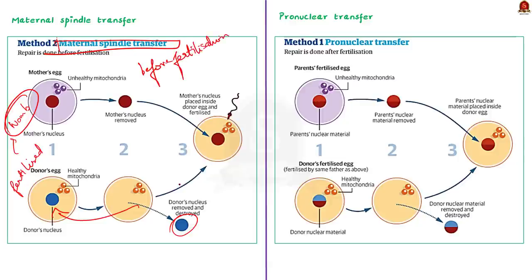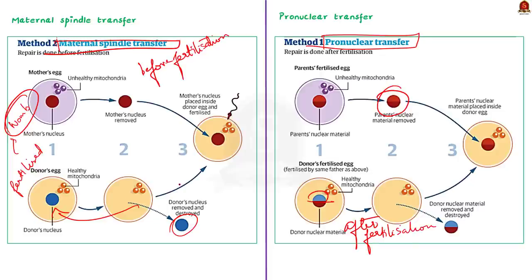Now, pronuclear transfer is essentially the same as maternal spindle transfer, but the donor's egg nucleus is replaced with the mother's nucleus after fertilization. In pronuclear transfer, both eggs from the mother and the donor are fertilized using the sperm of the same father. The fertilized egg is known as a zygote. After fertilization, the nucleus of the donor zygote is removed and replaced with the nucleus of the mother's zygote. This will also prevent the passage of defective mitochondrial DNA to the child. In this news article discussion we saw in detail about mitochondria, its functions, and the two methods of mitochondrial replacement therapy.